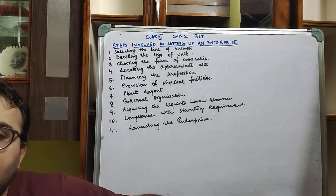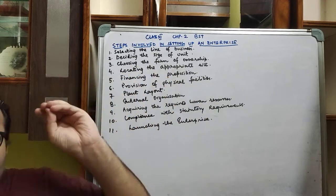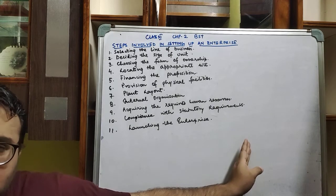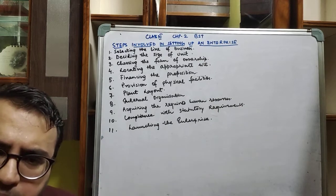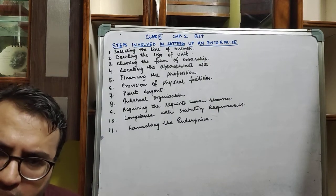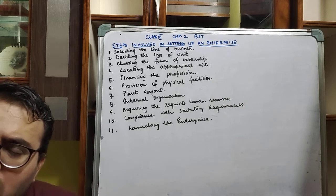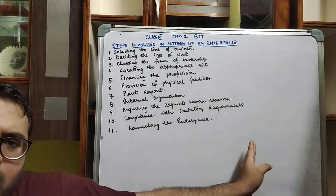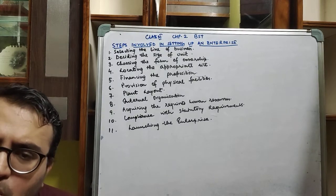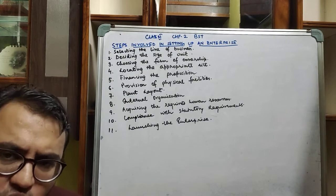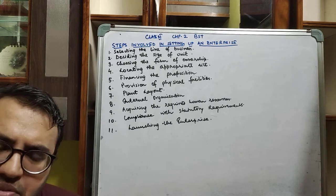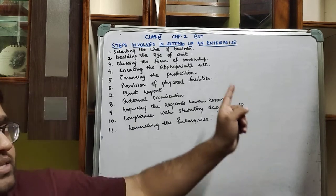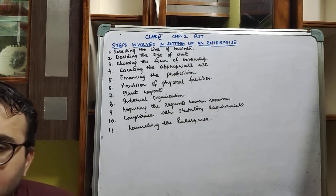That completes the introduction part. In the next video, we will cover in full detail all the bits and parts of the steps involved in establishing the enterprise. This introduction gives you a glimpse of what the steps are. Do watch the video entirely, listen carefully, and watch it several times to grasp the meaning and concept. If you have the book, please refer to it; if not, ask for the PDF. In the next video, we will discuss all 11 steps in complete detail.